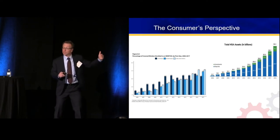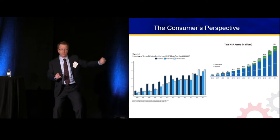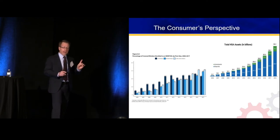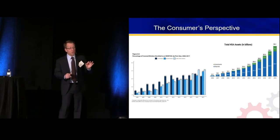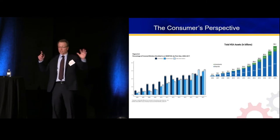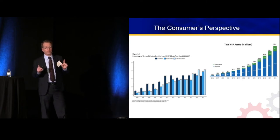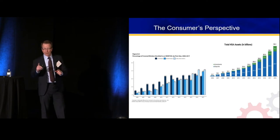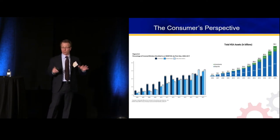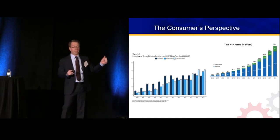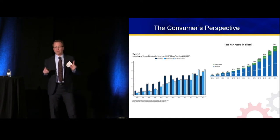As opposed to electronically sliding a clean claim out to Blue Cross — you're contracted, state law mandates a 21–28 day turnaround, money comes back automatically — the data is now starting to show that the success rate of getting that money from the patient is 20% less effective than getting it from the insurance company. Cost matters.